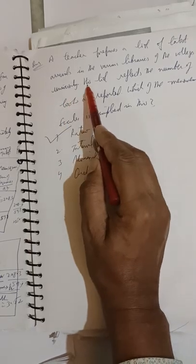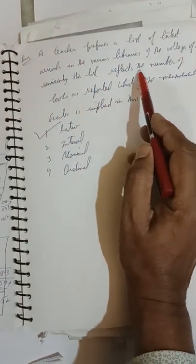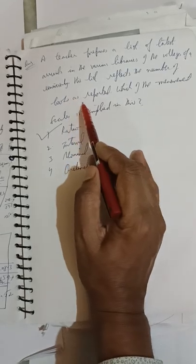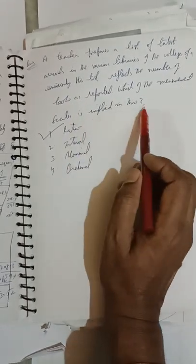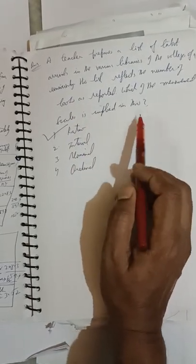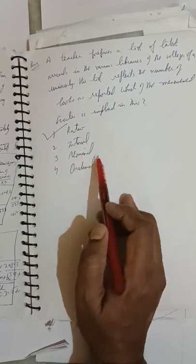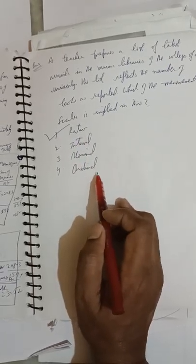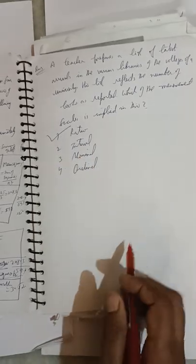A teacher prepares a list of latest arrivals in the various libraries of the colleges of university. His list reflects the number of books as reported. Which of the measurement scales is implied in this: ratio, interval, nominal, or ordinal? In this case, ratio scale is the correct answer.